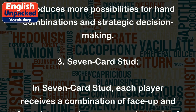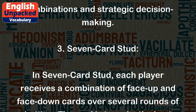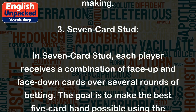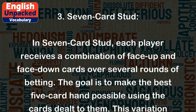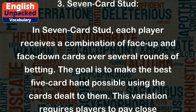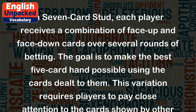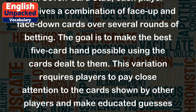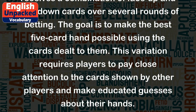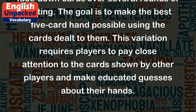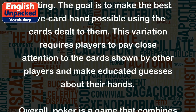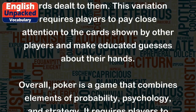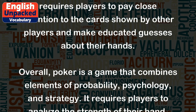3. Seven Card Stud. In Seven Card Stud, each player receives a combination of face up and face down cards over several rounds of betting. The goal is to make the best five card hand possible using the cards dealt to them. This variation requires players to pay close attention to the cards shown by other players and make educated guesses about their hands.